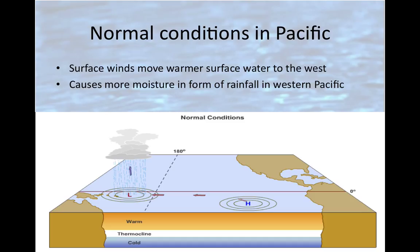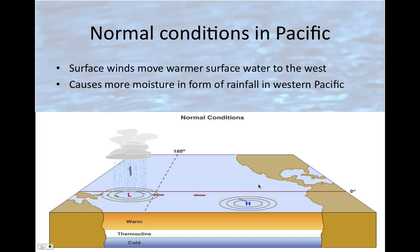So before we talk about El Niño, which is an abnormal occurrence, we need to talk about what normal looks like in the Pacific Ocean. Here's the Pacific Ocean — here's the United States, California over here, South America, and over here is Australia. You're kind of looking at the ocean at a cross-section here, with warm water on top because it is less dense, and cold water on the bottom because it is more dense. Normally there are surface winds that move water across the Pacific towards Australia — so they are moving towards the west.